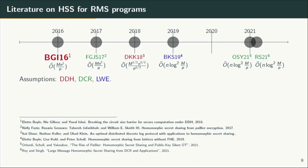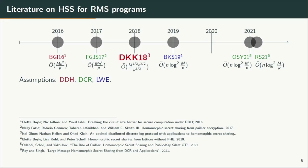For BGI 16, the running time is order mn squared by p, hence m has to be poly-sized and p has to be an inverse polynomial. In a follow-up work, Ziyo et al. construct a similar HSS scheme based on Paillier encryption, which is based on the Decisional Composite Residuosity assumption — they achieve the same complexity as BGI 16. In a work due to Denier, Keller and Klein in the following year, they improve the asymptotic complexity of the DDH-based HSS construction due to BGI 16, reducing the running time to square root of m by p into n to the power 3/2. Note that this still only gives an inverse polynomial error and poly-sized message space.